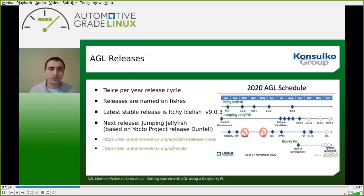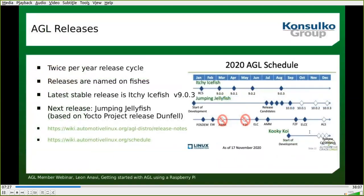Let's have a look at the AGL releases. They are done twice per year and are named after fish. The latest stable release is Itzy iFish, version 9.0.3. The next release is Jumping Jellyfish, based on the Yocto Project's Dunfell release — which is a long-term support release of the Yocto Project. More details are available at the Automotive Grade Linux wiki. Here is a screenshot from the wiki with the current AGL schedule as of November 17th, 2020.